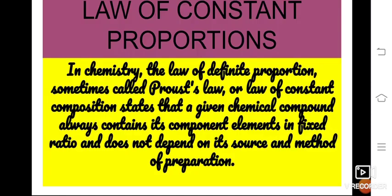Law of constant proportion — also called the law of definite proportion or Proust's law: a given chemical compound always contains its component elements in a fixed ratio, and does not depend on its source or method of preparation. Whatever reactants are taken, they will have their own fixed proportion.